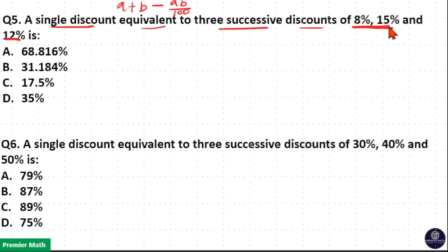Now take the first two discounts then count the successive discount. Here 8 plus 15 is 23%. 23% minus 8 into 15 divided by 100. 15 into 8 is 120. Now 120 by 100 is 1.2.